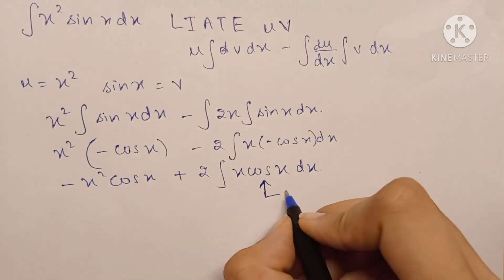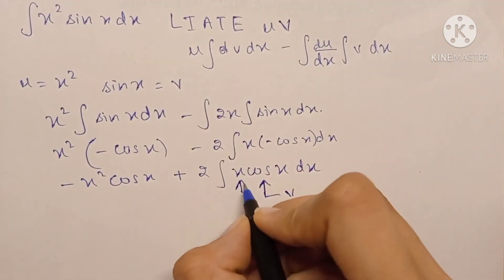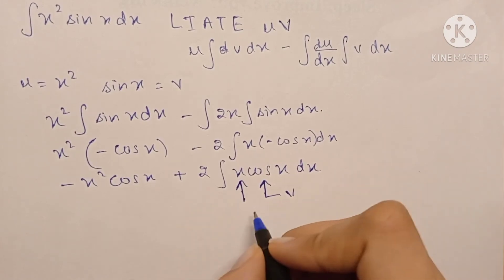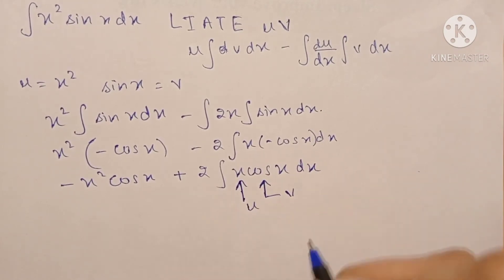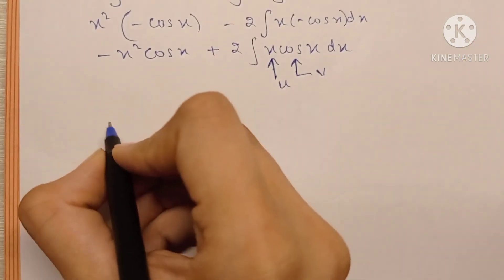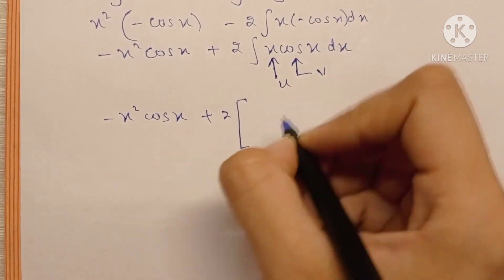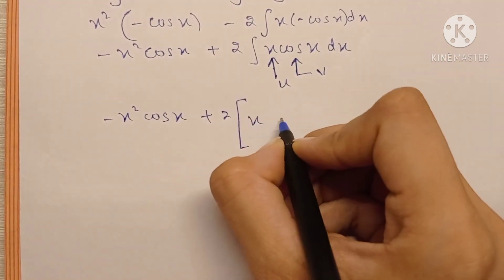I meant the v term because it's the trigonometric function and this is algebraic with a degree of one, so this becomes the u term. Alright, so let's integrate further. Minus x² cos x plus 2 into u into the integration of v.